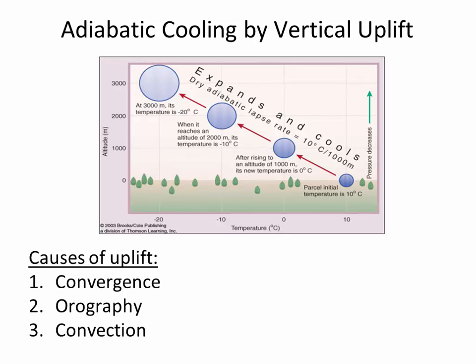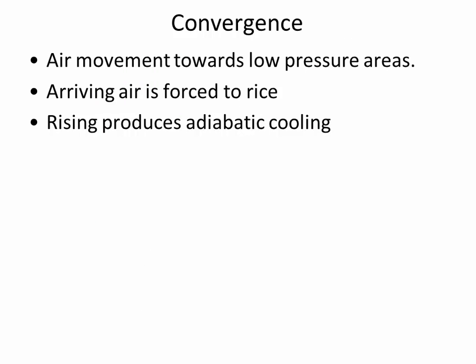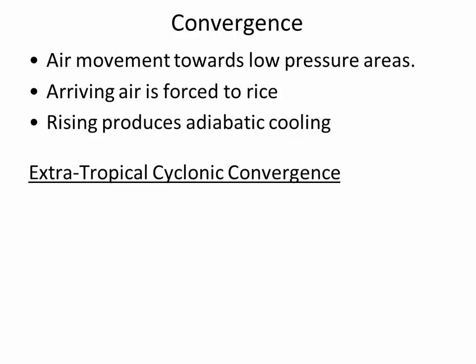These are the three things that force warm, moist air upward: convergence, orography, and convection. Convergence is where two fronts come together — one cool, one warm, or pressure fronts — and the arriving air is forced to rise up over the existing air. Because of that rising, there's a cooling of the moist air. This is called extra-tropical cyclonic convergence.